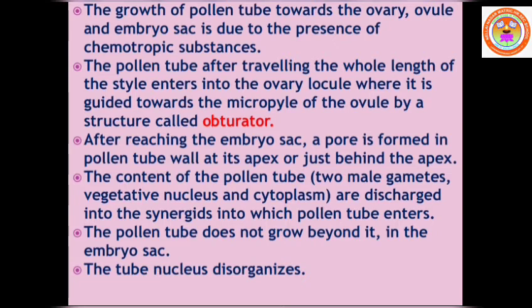The obturator is a structure found in the ovule that guides the pollen tube to enter into the micropyle. It can originate from different parts of the ovule: it may originate from the placenta of the ovule, as in Euphorbiaceae, or it may originate from the funiculus, as in Anacardiaceae.